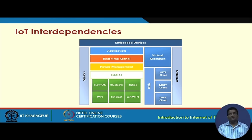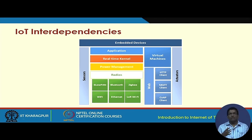After the power management unit, we have different radios including Bluetooth, Zigbee, 6LoWPAN, Wi-Fi, and Ethernet. These different radio technologies help in communicating the sensed data onward to other nodes and serve the communication purpose.